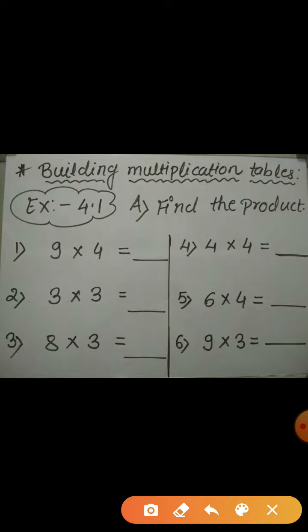See the first example. You have to find out the product of 9 and 4. So, either you can say the table of 9 till 4 times or you can say the table of 4 till 9 times to find the product, right? I am going to say the table of 9. So children, say with me.